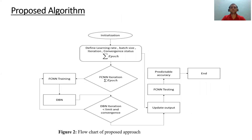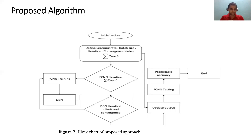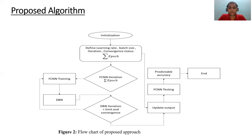This is our proposed algorithm. We initialize by providing learning rate, batch size, iteration, and convergence parameters based on epochs. This goes to the FCNN iteration model. We have divided the dataset into train set, validation set, and test set. FCN training passes through the DBN network, and if it is properly converging, it passes as updated output. Then FCN testing takes place, we predict the accuracy, and it ends. This is the complete procedure of the proposed algorithm for our FCNN module.